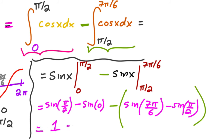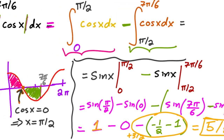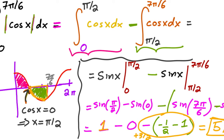Sine of π over 2 is 1, and sine of 0 is 0. Sine of 7π over 6 is negative one half, and sine of π over 2 is positive 1. With the negative sign, we have negative one half minus 1, which is negative 3 halves inside, and times negative gives plus 3 halves. Adding to 1 gives a total area of 5 halves.